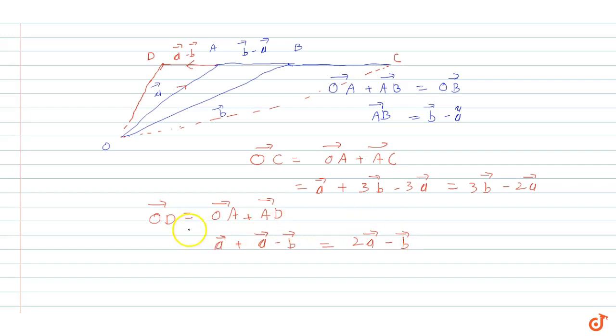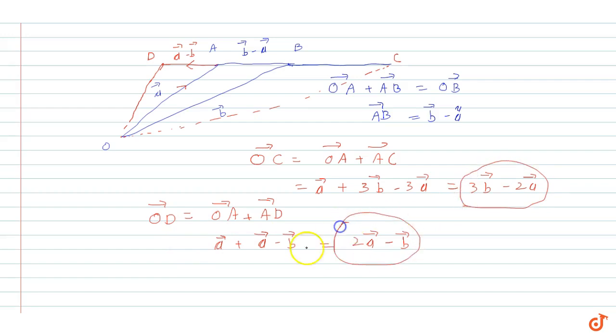So the position vector of D is 2A minus B, and the position vector of C is A plus 3(B minus A). This is our answer.